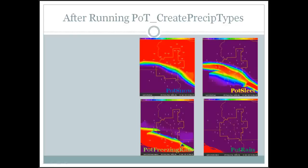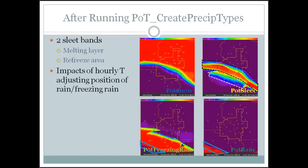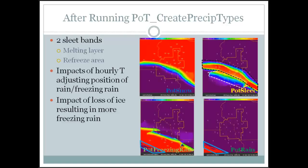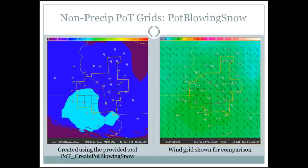So what does this look like after running the create-precip-types procedure? Here's the example. Some pretty cool things: look at the sleet grid — you see actually two sleet bands. One shows the melting layer, and there's a second band that shows the refreeze. Try drawing that manually every hour — it'd be pretty difficult. You also see the impact of your temperature grids on precip type, where freezing rain is over one specific area and rain is over another. You also see some impact from the loss of ice in the cloud, which expands the amount of freezing rain.